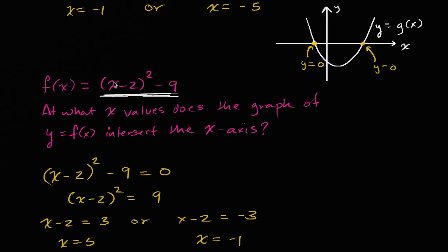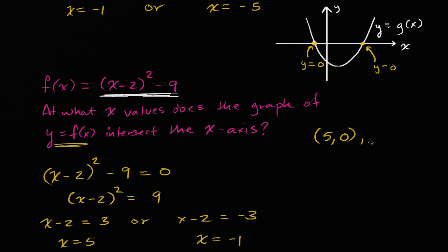You can verify that. If x is equal to five, five minus two is three, squared is nine, minus nine is zero. So the point five comma zero is going to be on this graph. And if x is equal to negative one, negative one minus two is negative three, squared is positive nine, minus nine is zero. So the point negative one comma zero is also on this graph. Those are the x values where the function intersects the x axis.